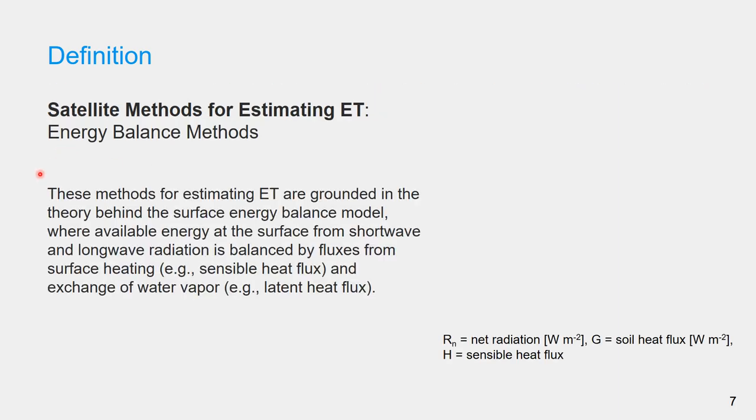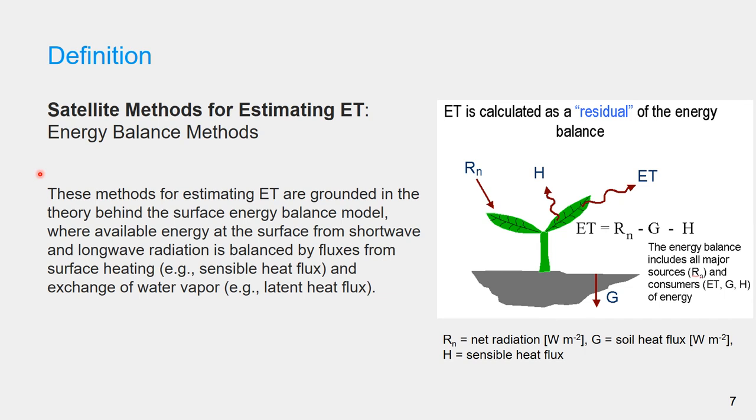Evapotranspiration can be calculated as a residual of energy balance. This method for estimating evapotranspiration, which is widely used in the satellite method of ET estimation, are grounded in the theory behind the surface energy balance model, where available energy at the surface from the short wave and long wave radiation is balanced by fluxes from the surface heating or sensible heat flux and exchange of water vapor.